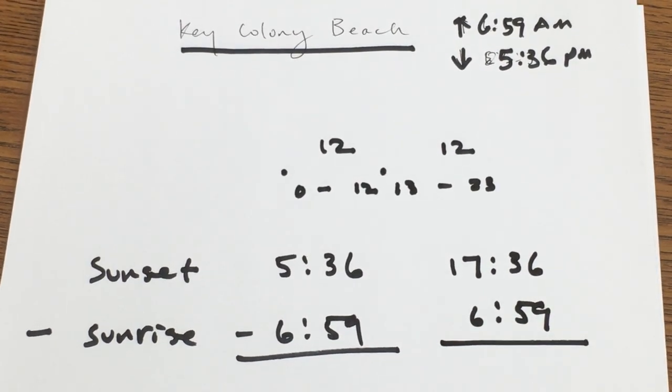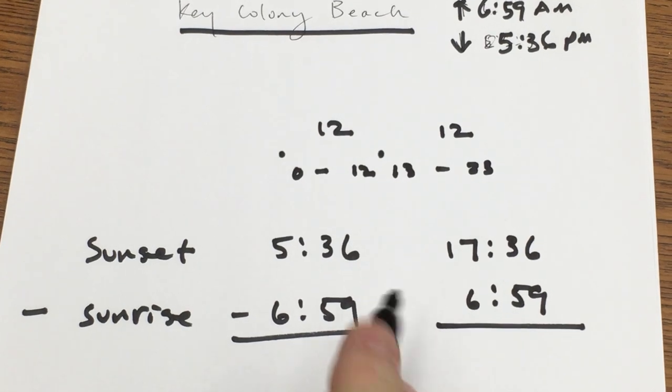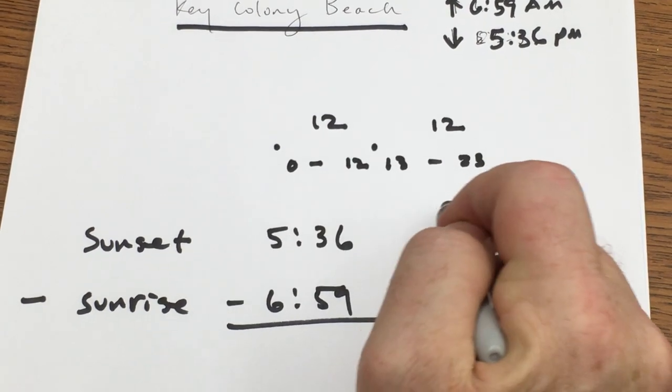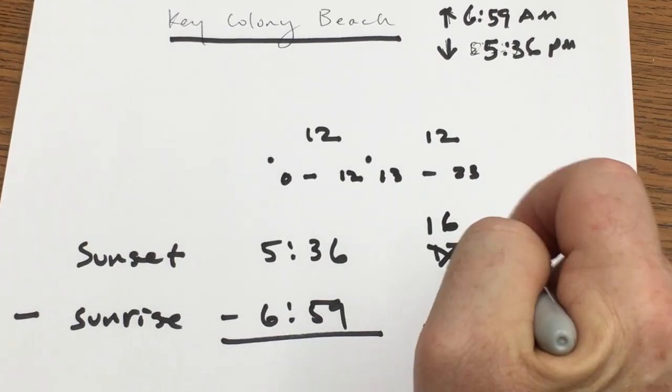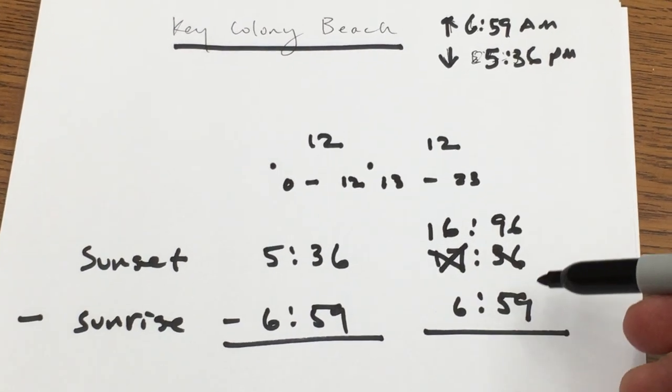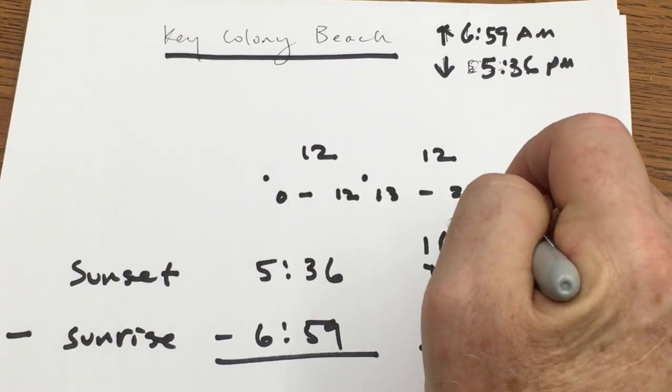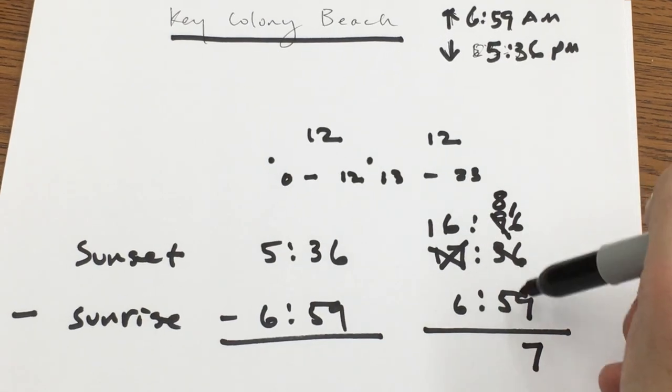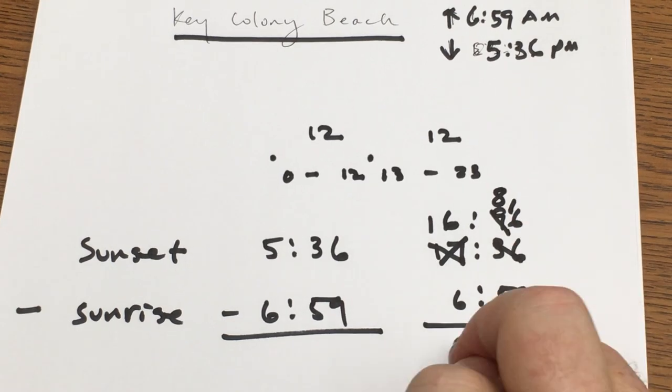So now we can subtract. But we've got a problem. 36 and 59. So we have to change that. And the easiest way to do this is to change this to 16. And that means I have 60 minutes that I can add to that. So that becomes 96. Now 16:96 in time is really 17:36. But I can subtract 59 from 96. So I have to borrow. 16 minus 9 is 7. 80 minus 50 is 30. And 16 hours minus 6 hours is 10.